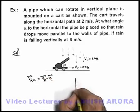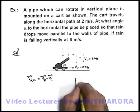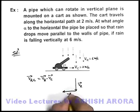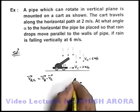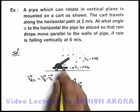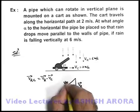You can see velocity of rain is in vertical direction, cart is toward right, so minus v_c is in this direction. Rain will be falling relative to cart, or as seen from cart, in this direction.